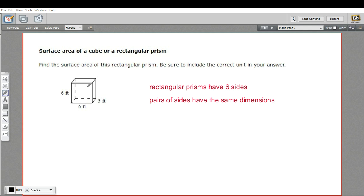What we need to do is find the area of each one of the faces or sides of this rectangular prism and then add all those together. Every rectangular prism is going to have six sides, and depending on the measures, you're always going to have at least pairs of sides that have the same dimensions.